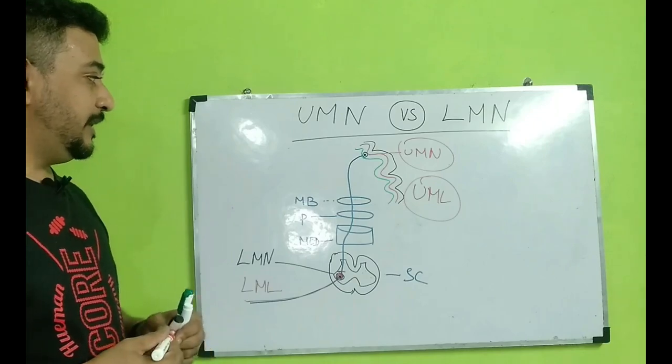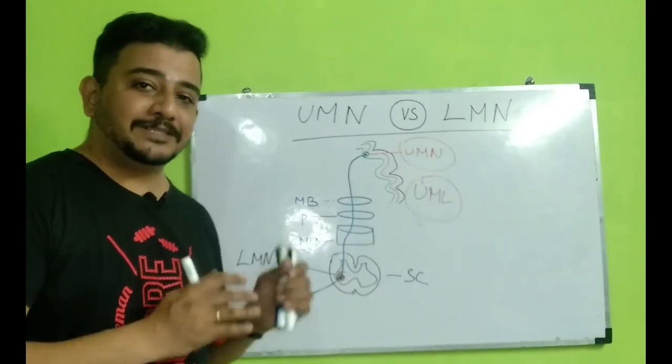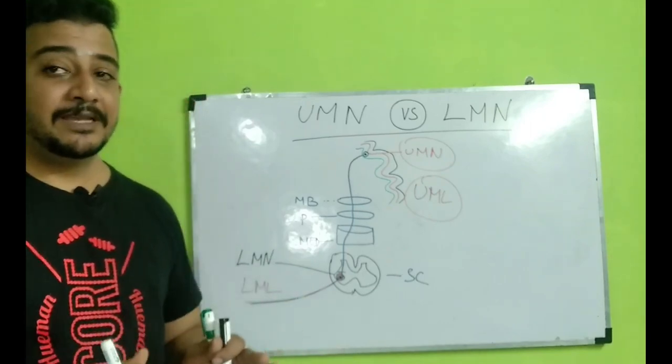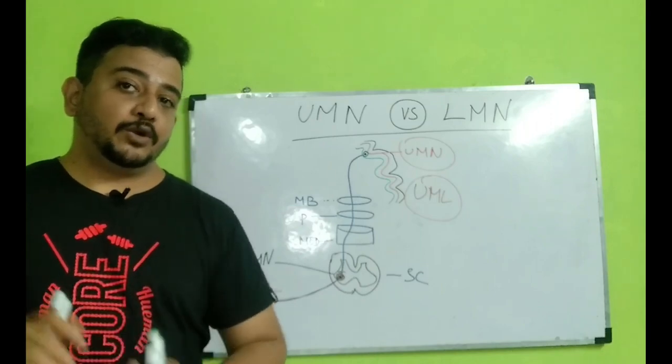This is a very important thing we use only for the motor system, not for the sensory system. When it comes to sensory system, we use different terminology like first order neuron, second order neuron, and third order neuron.